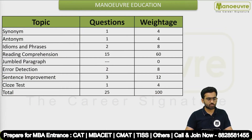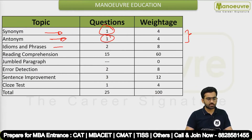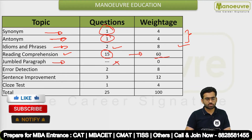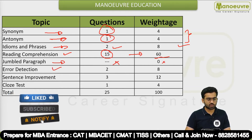Now let's see the previous year question paper analysis. Questions came from synonyms and antonyms — total weightage of 8 marks. Idioms and phrases had 2 questions, so 8 marks. Reading comprehension is the most dominating part: 15 questions were based on RC, accounting for 60 marks. Jumbled paragraph had no questions — zero marks.